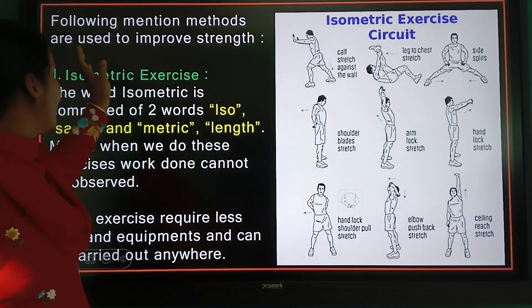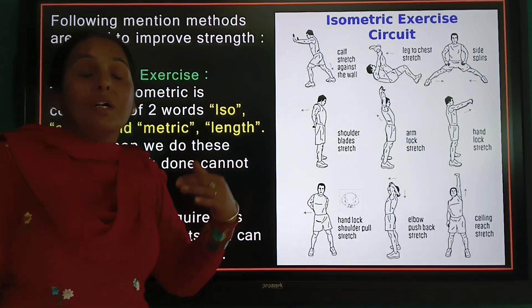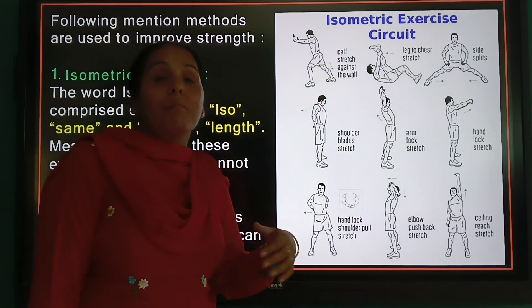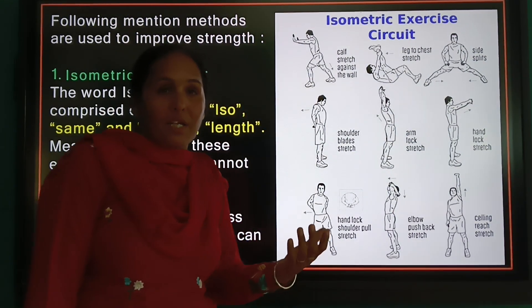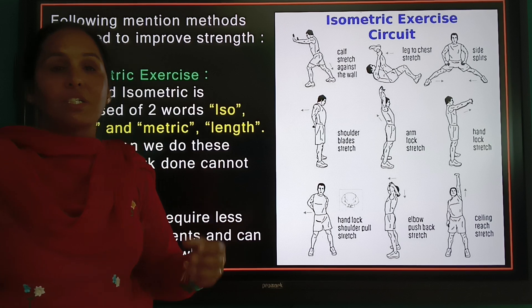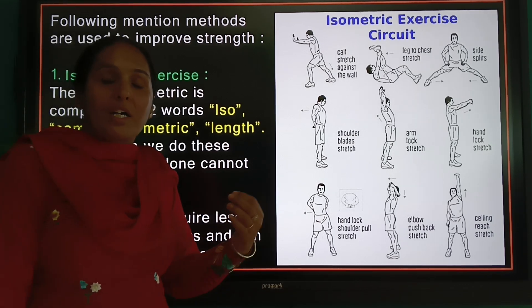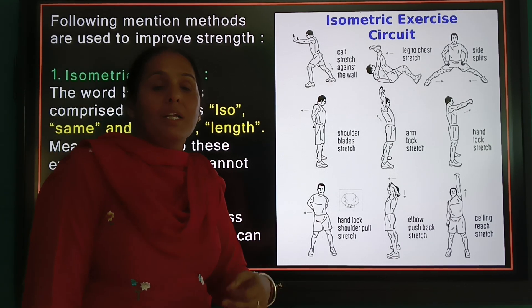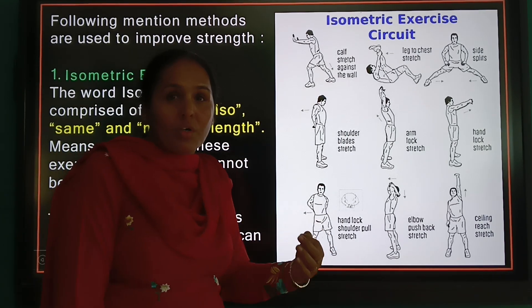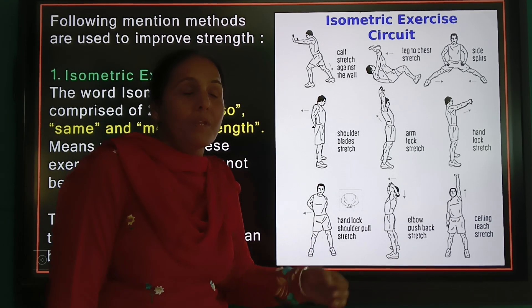What are our development methods? There are three methods: the isometric method, the isotonic method, and the isokinetic method.